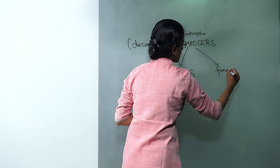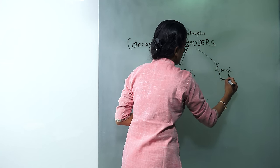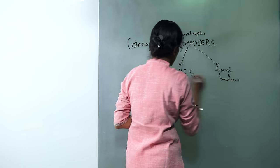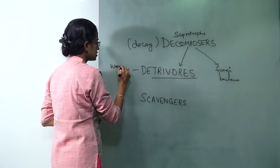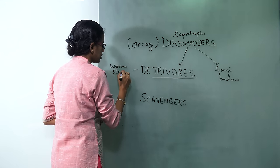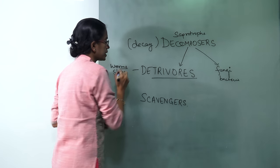They can be either fungi or bacteria as one of the types, and the other type is the detrivores. Under detrivores we have worms, slugs. A good example of detrivore would be earthworm.